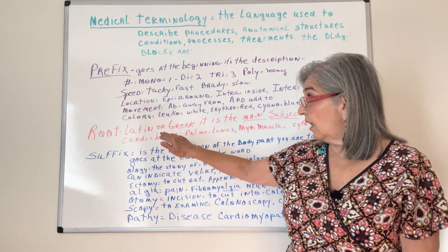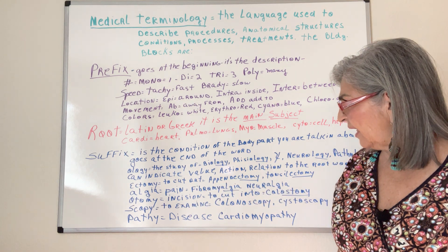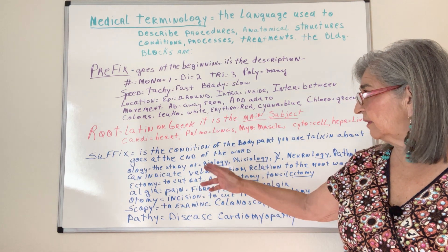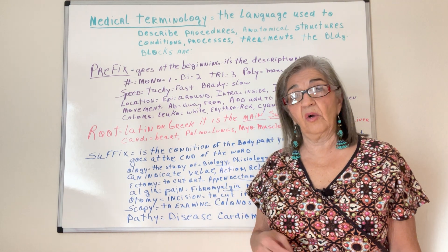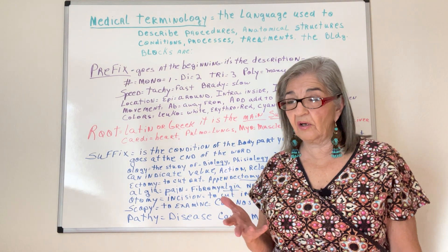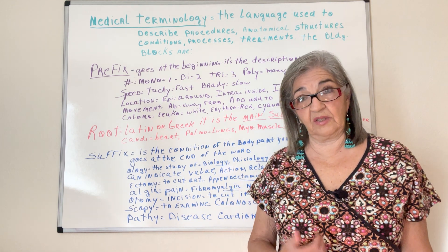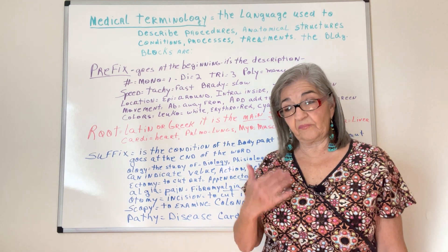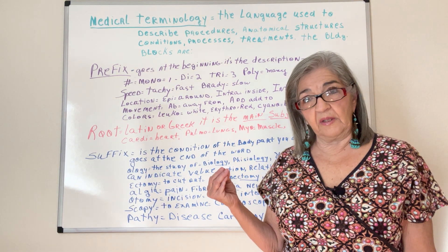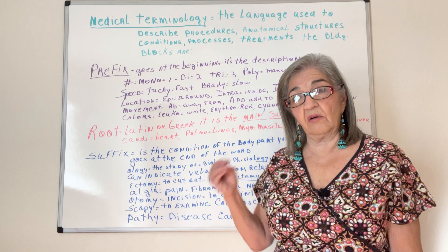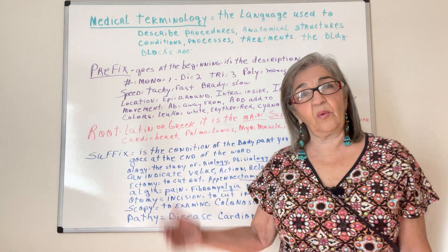Then the suffix tells you the condition of the root word. Is it swollen? Like '-itis' — I think I forgot to mention it earlier, but '-itis' means inflammation. So 'colitis' means inflammation of the colon, and 'gastritis' means inflammation of the gastrointestinal system. 'Itis' is describing the condition of what's going on with that main root word.